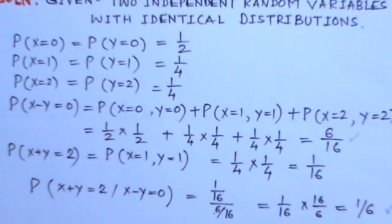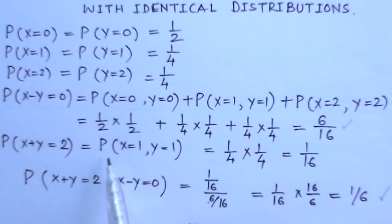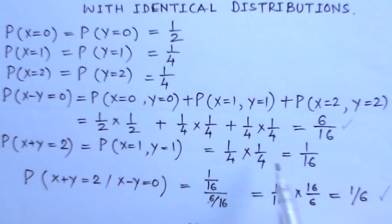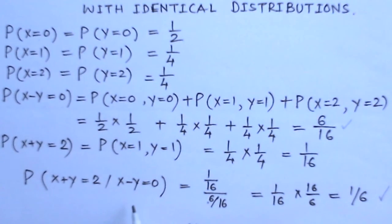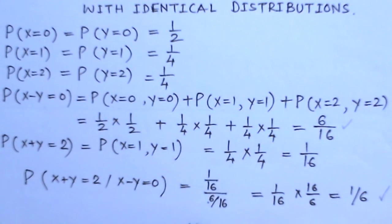Now, P(X+Y=2) within the event X-Y=0 is only possible when X=1 and Y=1. So P(X=1, Y=1) = (1/4)(1/4) = 1/16. The conditional probability P(X+Y=2 | X-Y=0) = P(X+Y=2 and X-Y=0) / P(X-Y=0) = (1/16) / (6/16) = 1/6.